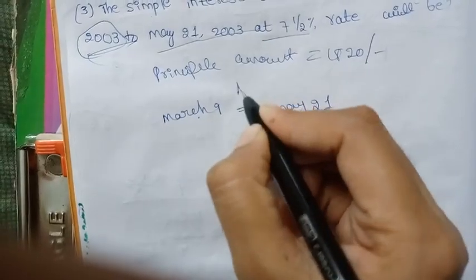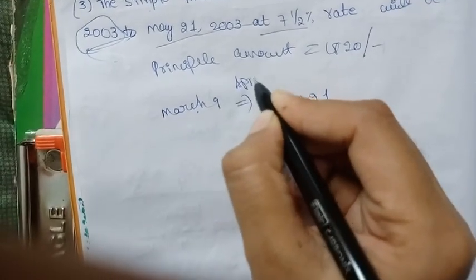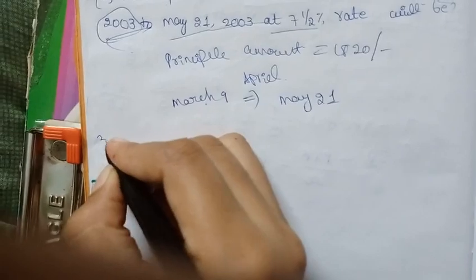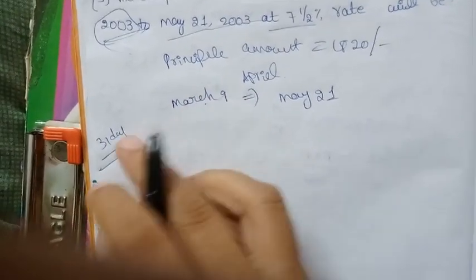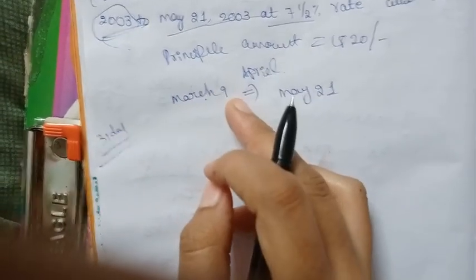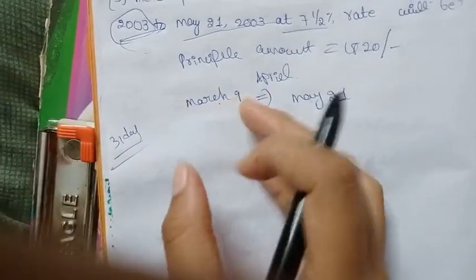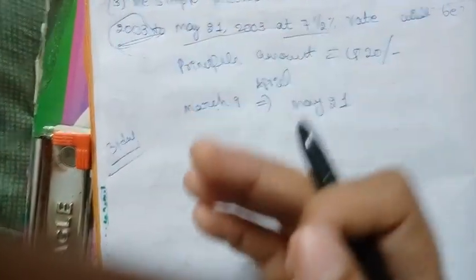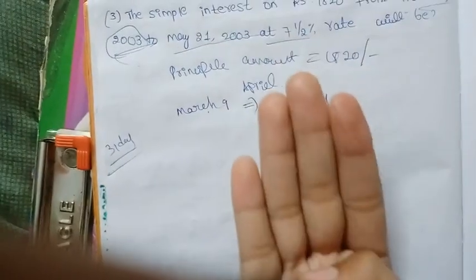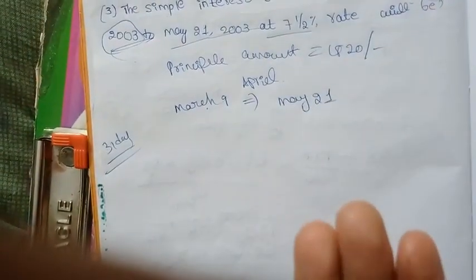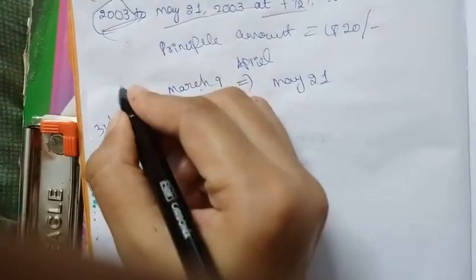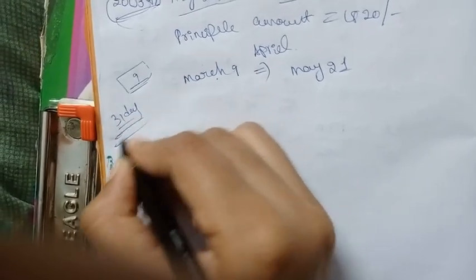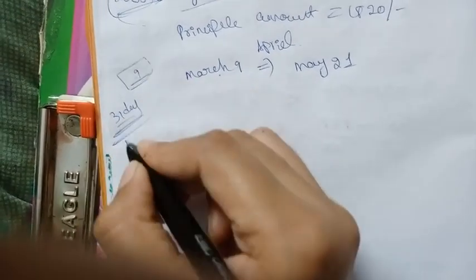Here we have the months of March and April. We need to find out how many days there are. In March there are 31 days. After the 9th day, we count the remaining days: 31 minus 9 equals 22 days remaining in March.